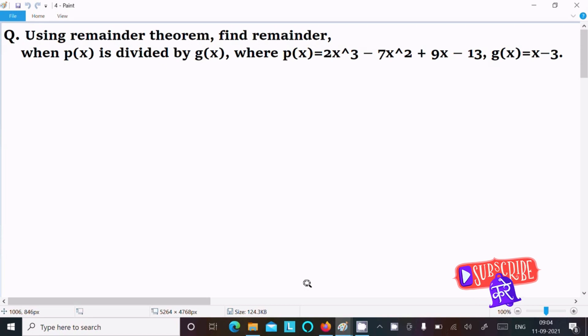I am going to find the remainder when p(x) is divided by g(x), where p(x) equals 2x³ minus 7x² plus 9x minus 13, and g(x) equals x minus 3. So let's see the answer. Here, writing p(x) equals 2x³